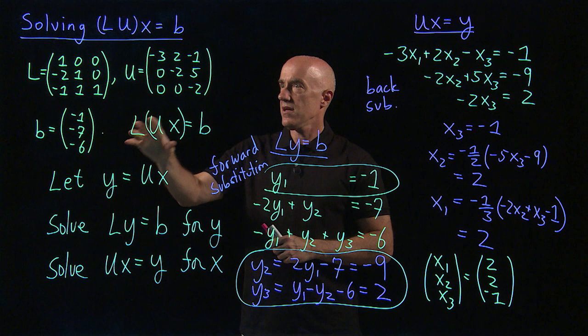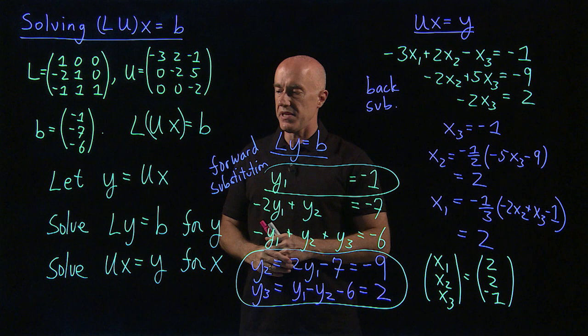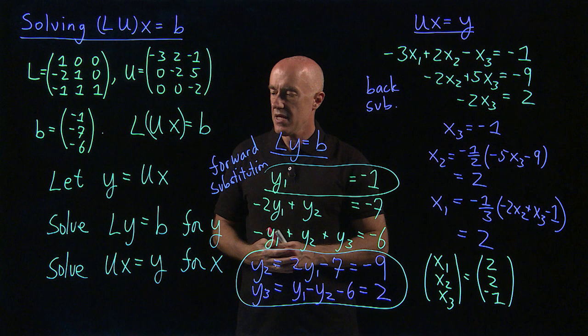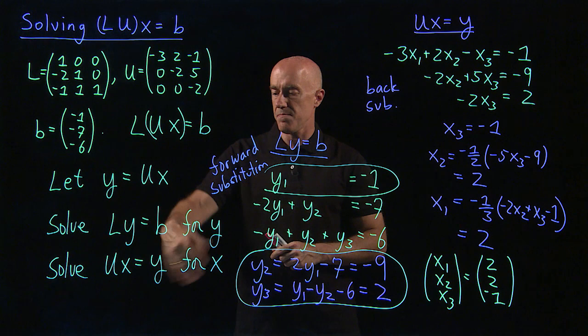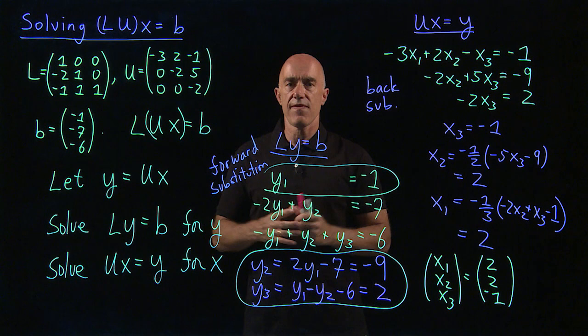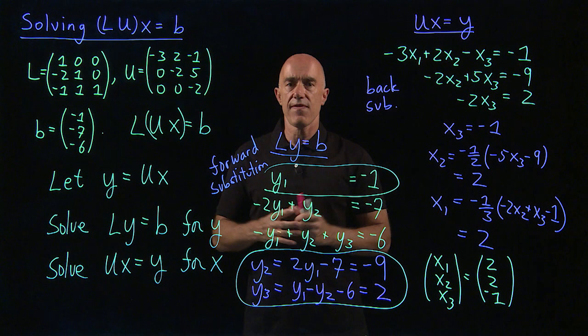So let me recap. To solve LUX equals B, you let Y equals UX and then you solve LY equals B first for Y. This is solved using forward substitution. And then you solve UX equals Y for X. That one's solved using backward substitution. And then you determine the solution. A very fast algorithm, a very useful decomposition. I'm Jeff Chasnov. Thanks for watching and I'll see you in the next video.